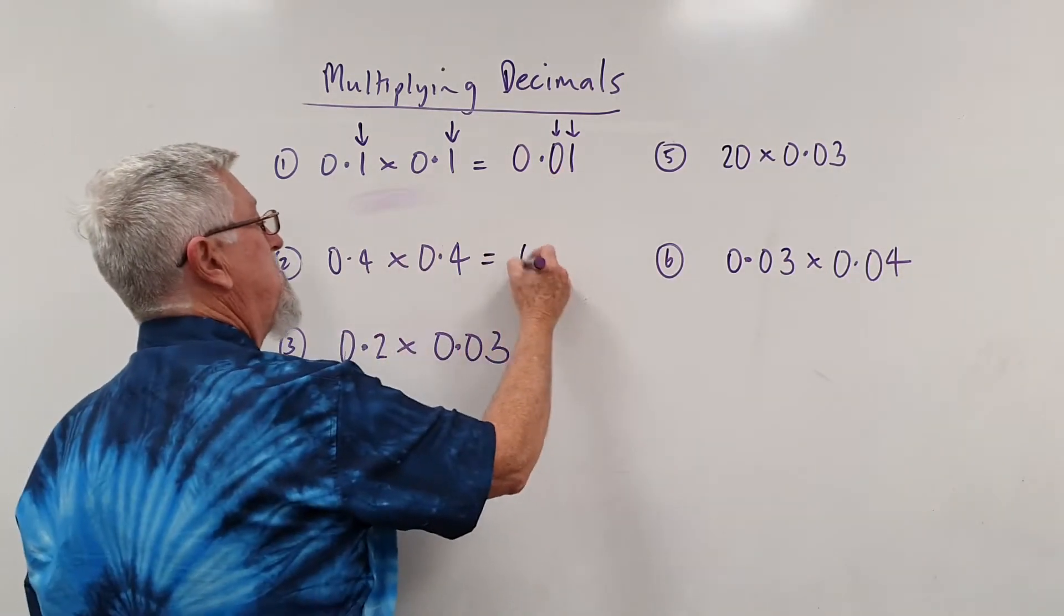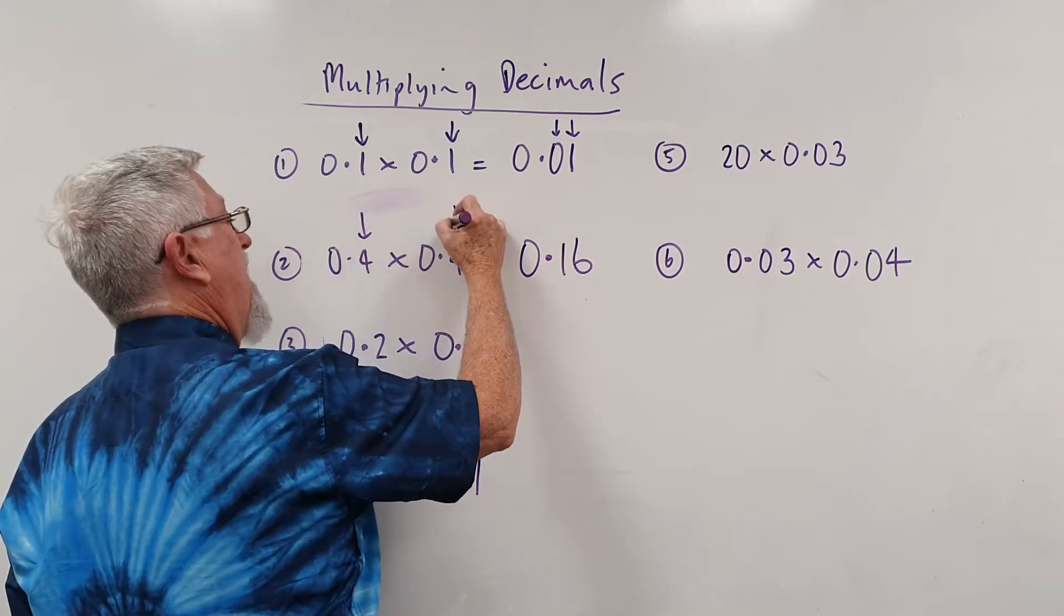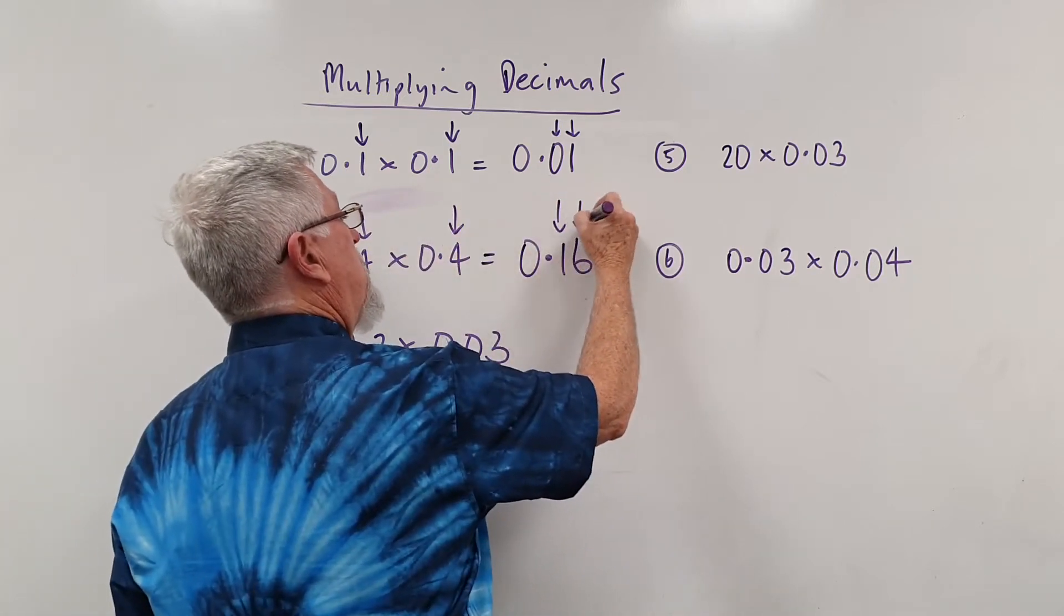Another one, four times four is sixteen, slightly different. They've got one decimal there and one decimal there, and there you can see the two decimals there.